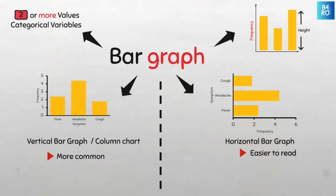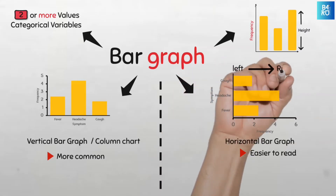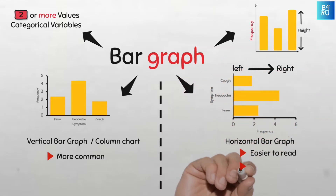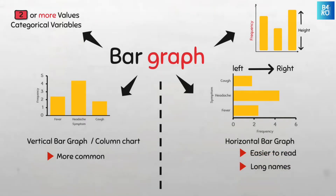As many people read from left to right, the horizontal bar graph is a better choice for variables with long category names, because there is more space on the left side of the chart.